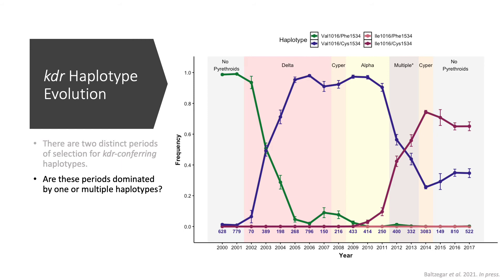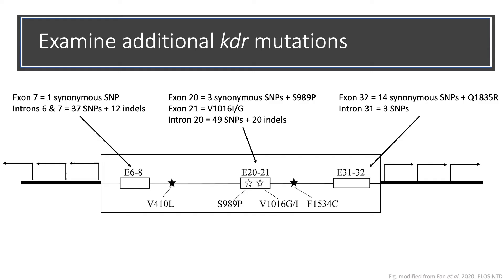This was interesting because it raised additional questions. The first is: are these periods dominated by one or multiple haplotypes? That is, do individuals with these resistance alleles carry the same or different mutations at other loci in the sodium channel gene? To answer this question, I am genotyping additional mutations in this gene. This will allow me to construct extended haplotypes with more than two loci, which will give us power to examine the demographic history.